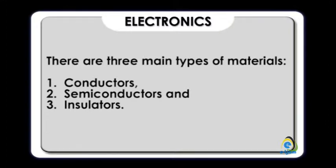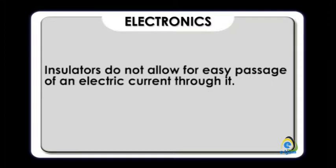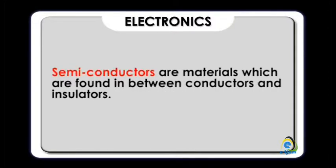Conductors are materials which easily allow the flow of electric current through them. Insulators do not allow for easy passage of electric current. Semiconductors are materials which are found in between conductors and insulators.